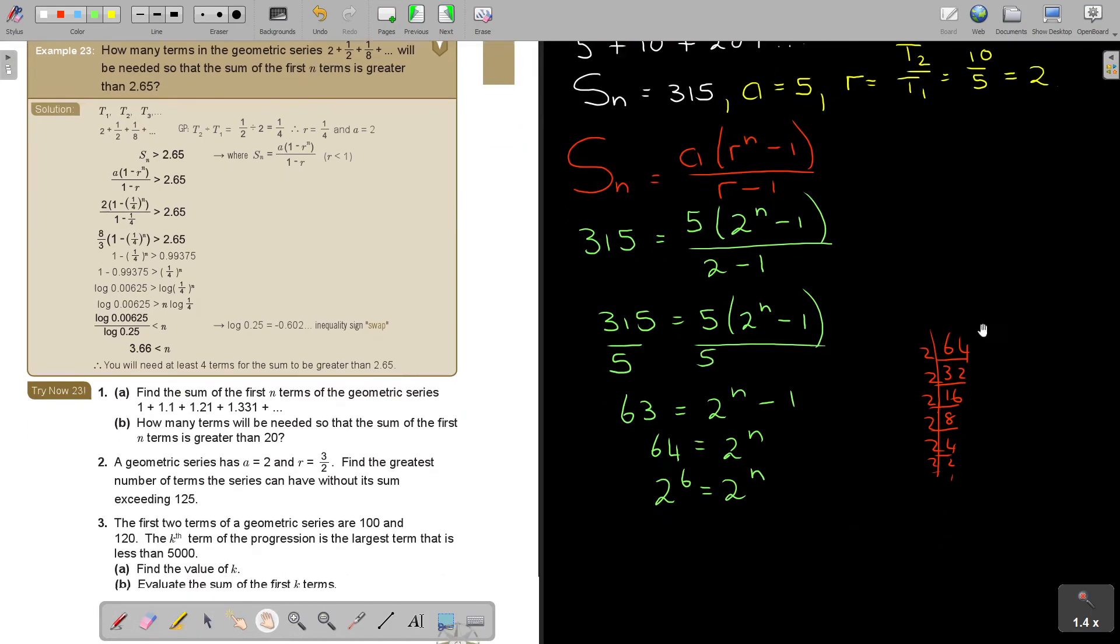But just for the other people, I just showed you. So therefore, N is equal to 6. So I can end 6 terms. 6 terms will give a sum of 315. And that will be my final answer.